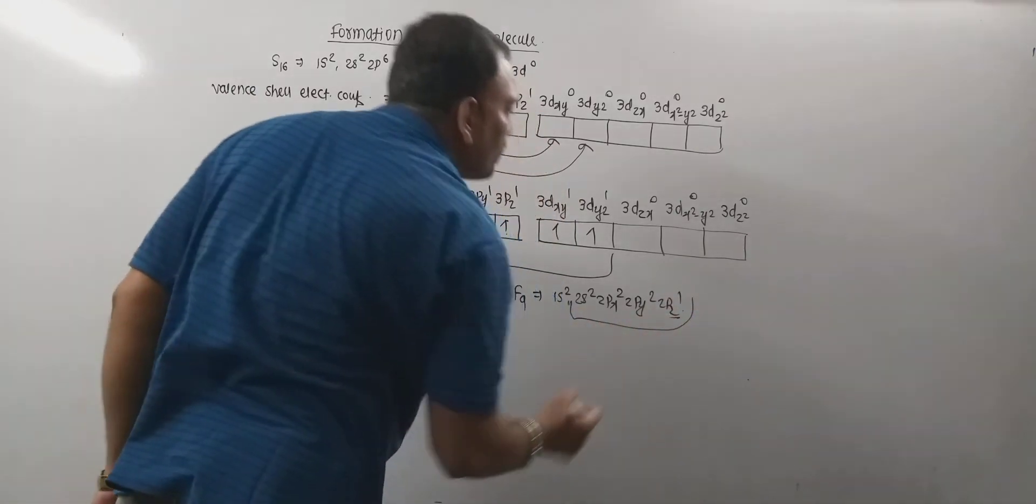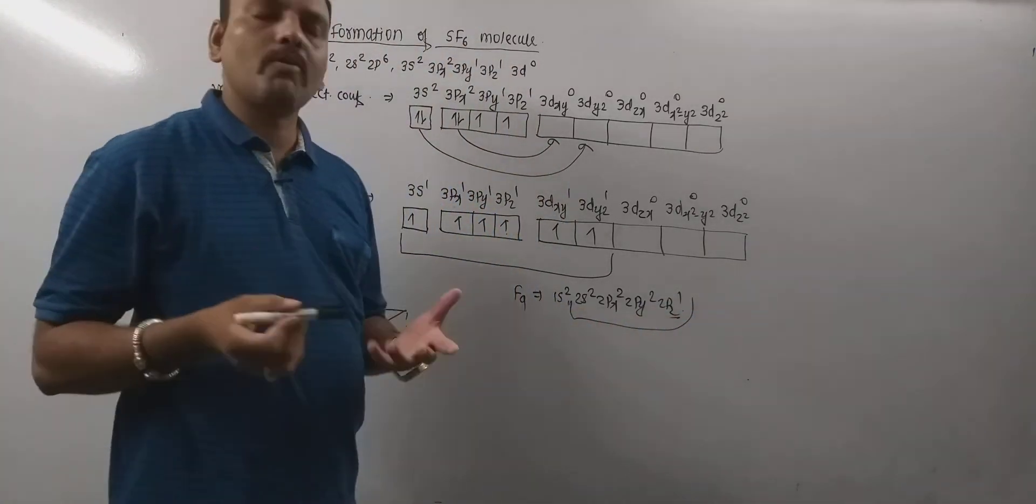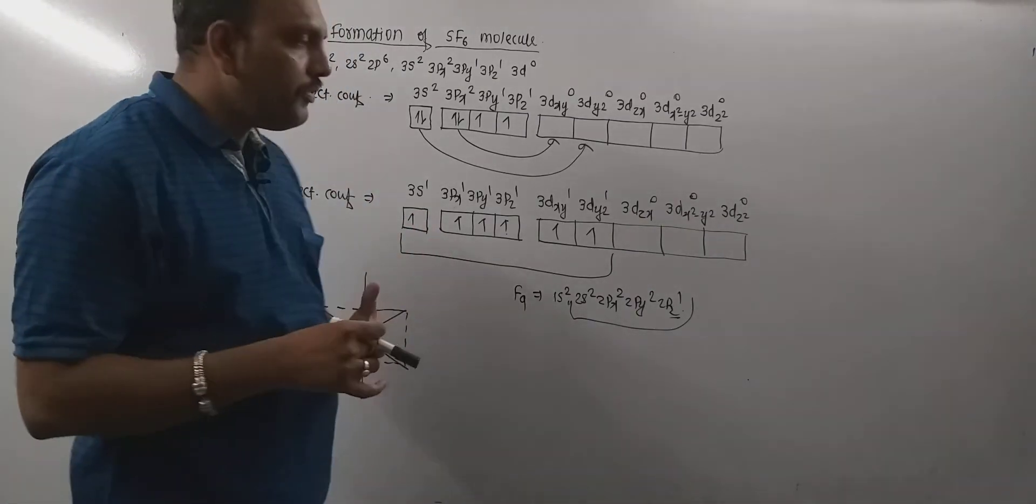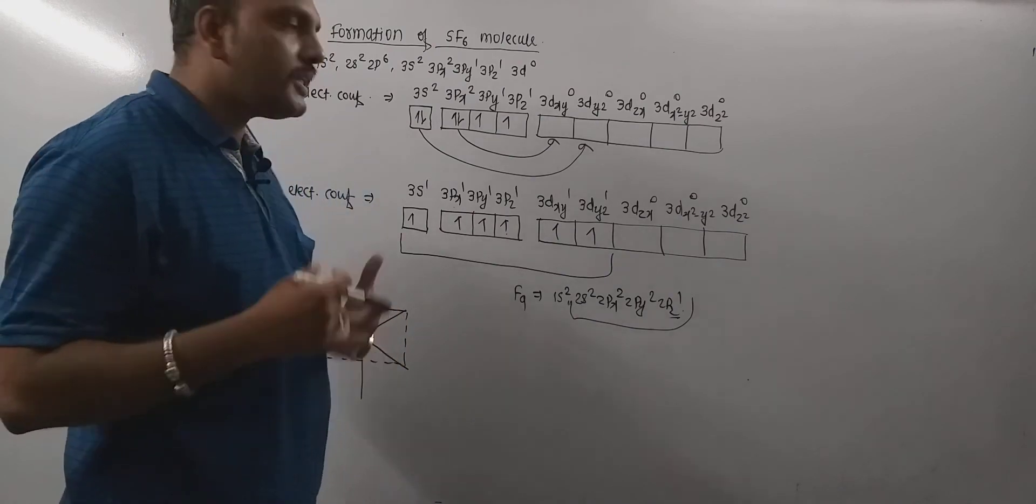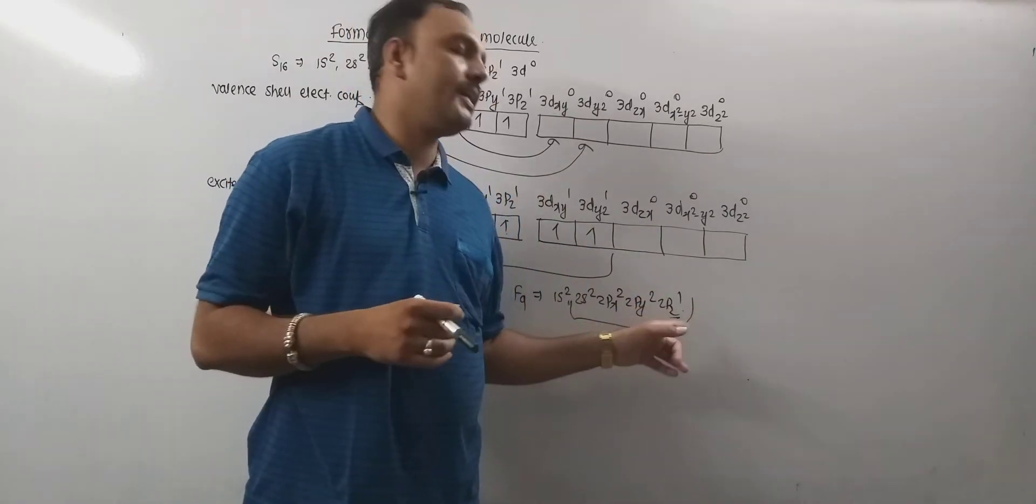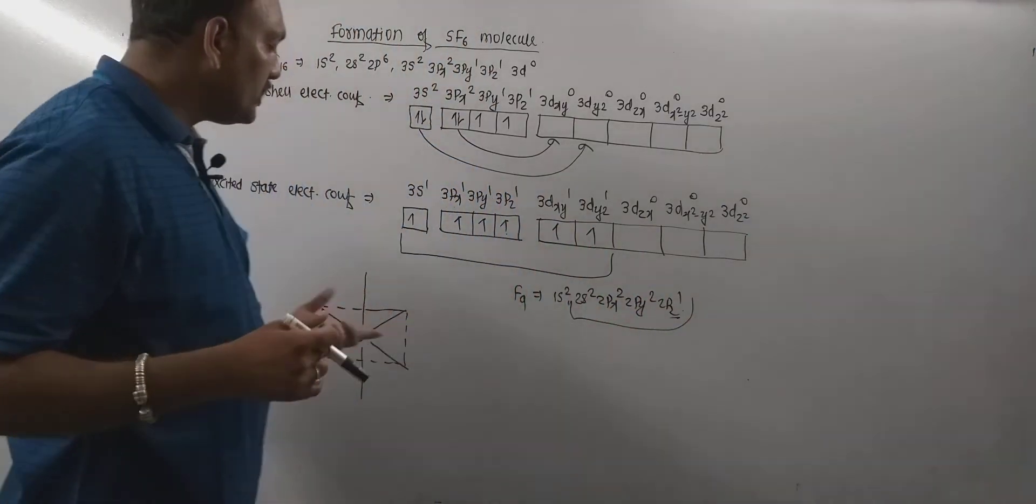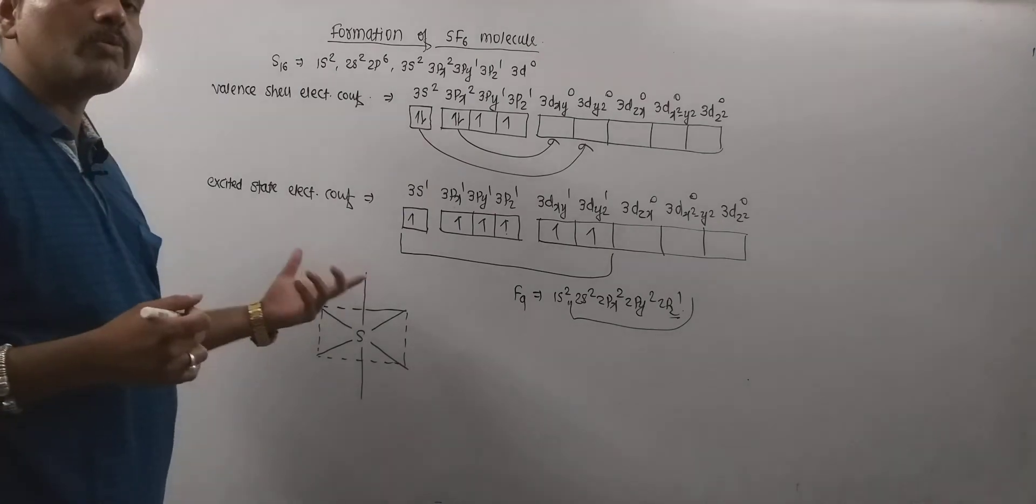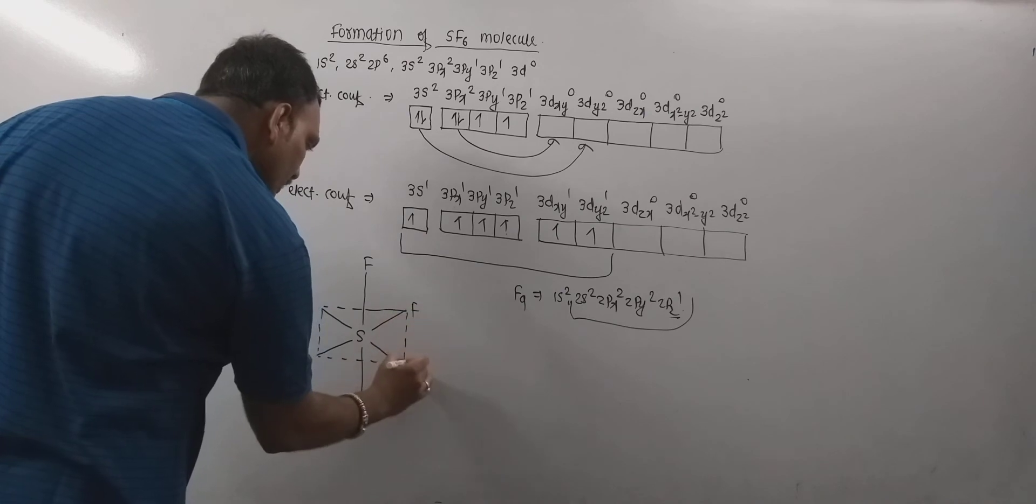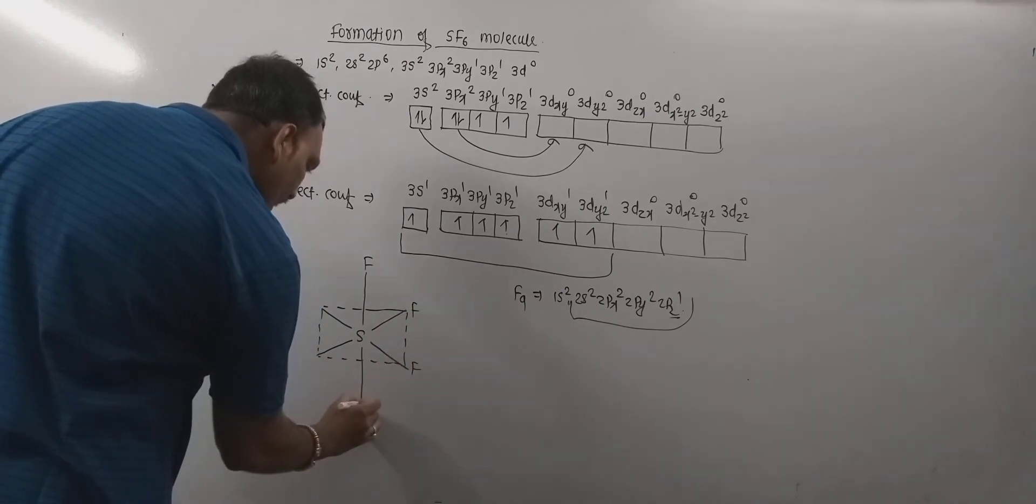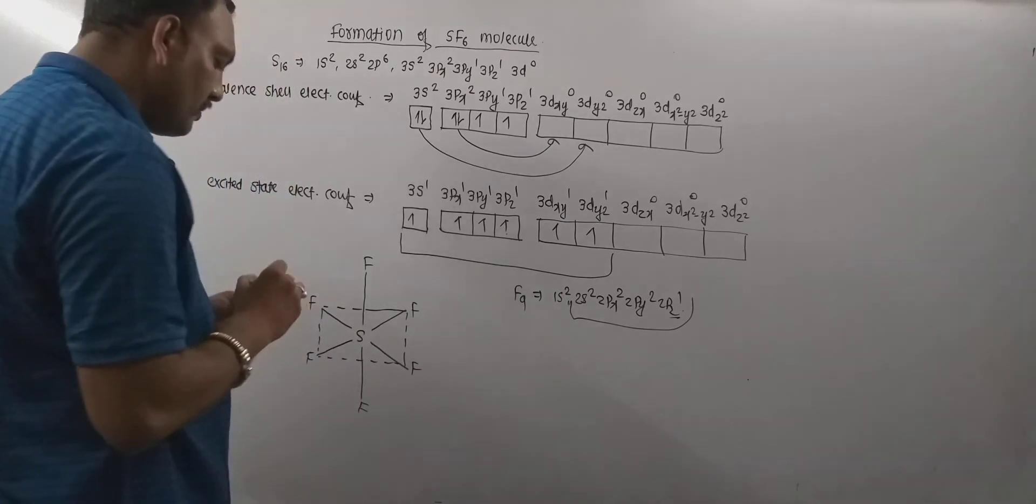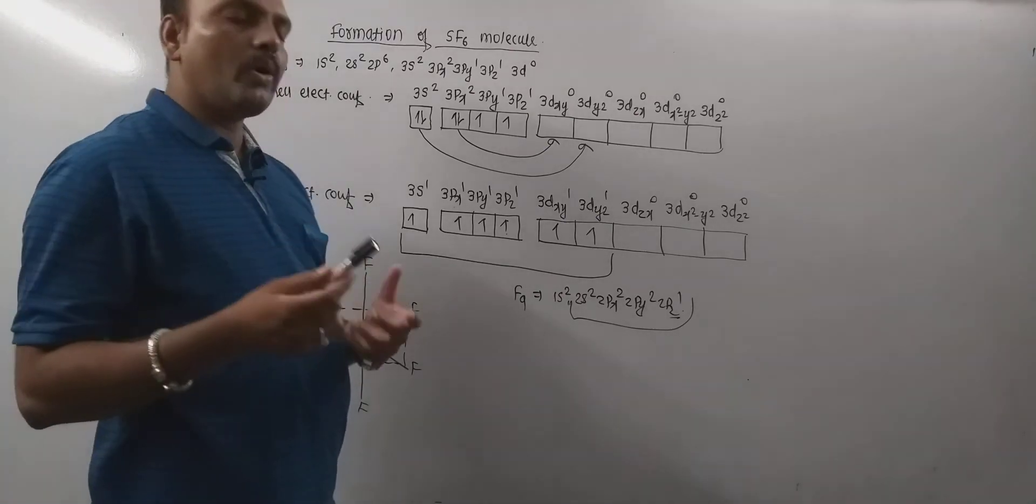So, this is valence shell and in valence shell 2pz orbital contain unpaired electrons. So, 6 fluorine atoms along with half filled pz orbital come closer to the sulfur and overlap with the SP3D2 hybrid orbitals of sulfur and that lead to the formation of 6 SF bonds. And which lead to the formation of SF6 molecule.